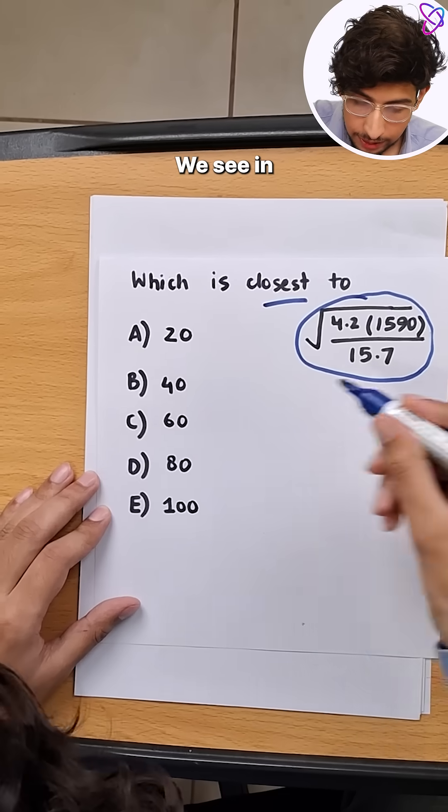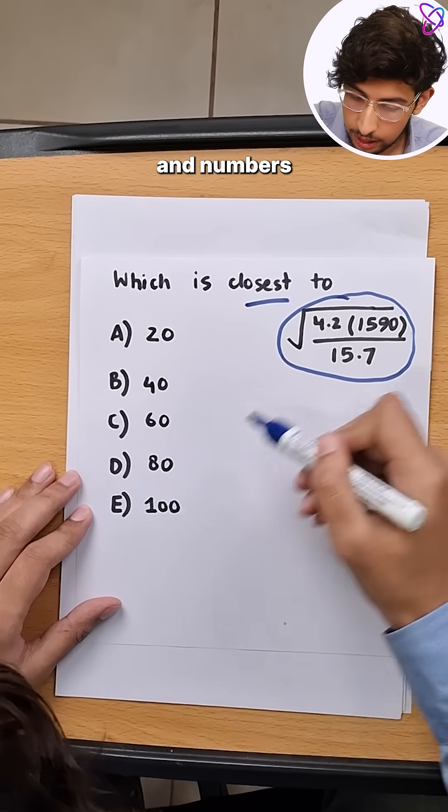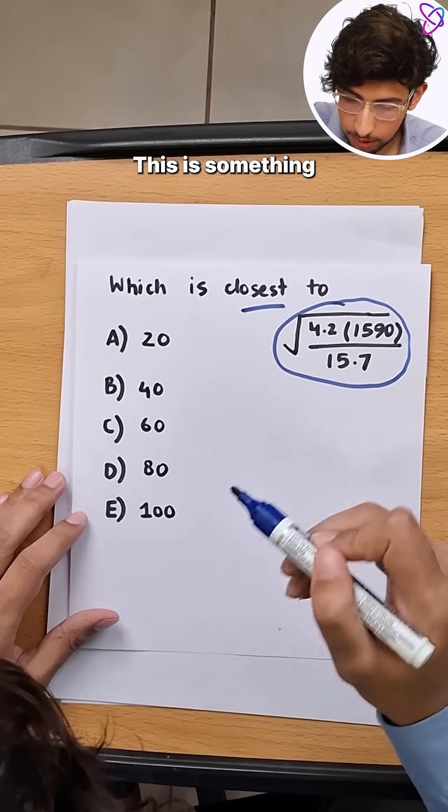So how do we solve this? We see in the options, every option is really far from each other and numbers are really small. This is something to keep in mind.